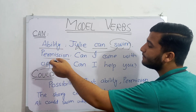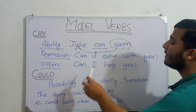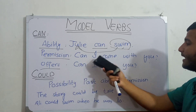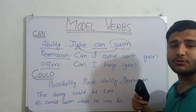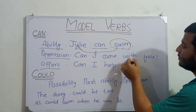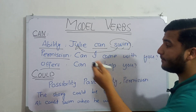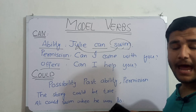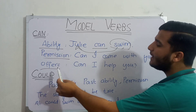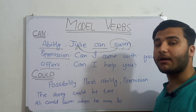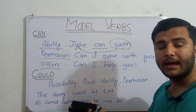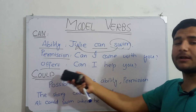Another function of 'can' is permission. For example, 'Can I come with you?' Here we want to know if we are allowed or not — it expresses the question of permission. Similarly, we use 'can' for offers as well: 'Can I help you?' Here we are offering assistance, so 'can' is also used for making offers.